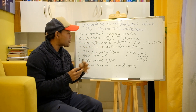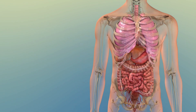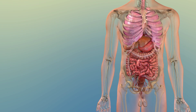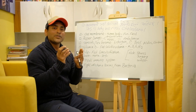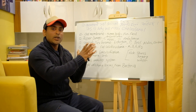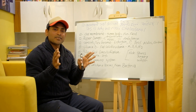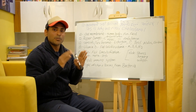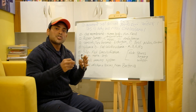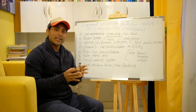Cholesterol is used to make sex hormones in our body, like estrogen, progesterone, testosterone, aldosterone, and cortisol. All these hormones are made from cholesterol. This is why our body cannot make these hormones without cholesterol. If you want these hormones to function, you cannot live without cholesterol. These hormones are derived from cholesterol, including testosterone.